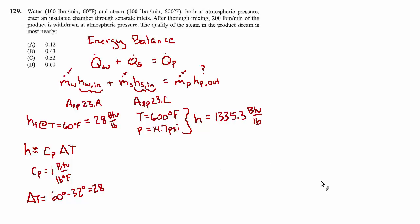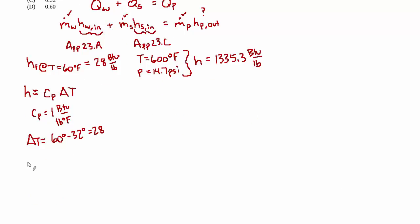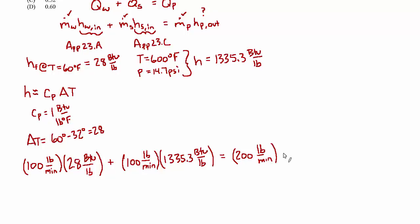Let's give ourselves some room and plug in these values. For the water, we have 100 pounds per minute times 28 BTU per pound, plus 100 pounds per minute times 1335.3 BTU per pound, equals the products, which is 200 pounds per minute times an unknown enthalpy, which we're calling H_p,out for now.